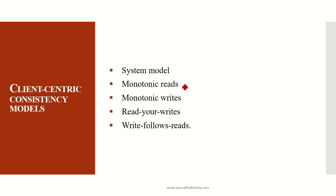For monotonic reads in the mobile-centric consistency model, whatever I read — whether I am in one geographical location or any other — my data is retrieved in a similar way from the server on my mobile phone. The server I am connected to gives me the same read result, whether I am in one part of the world or another.